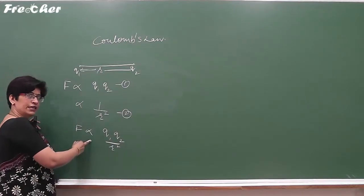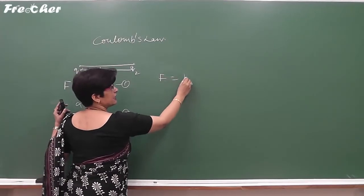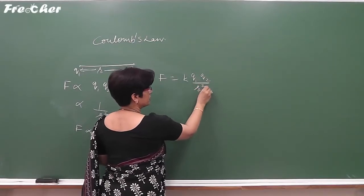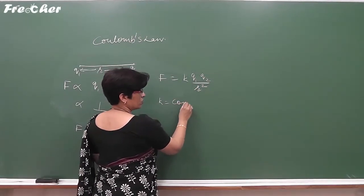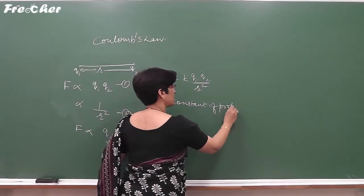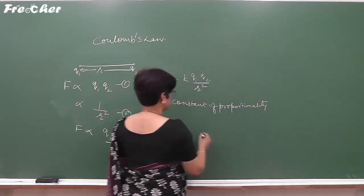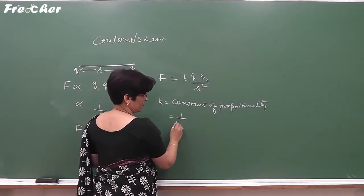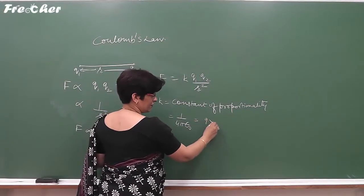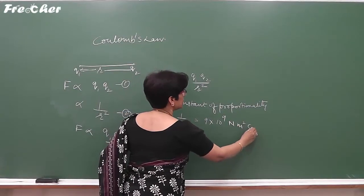When we remove the proportionality sign, we apply a constant K, giving F = K·Q1·Q2 upon R². This K is the constant of proportionality whose value is given by 1 upon 4πε₀. After calculating this value, we get 9×10⁹ Nm² per coulomb squared.